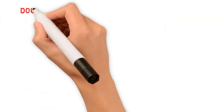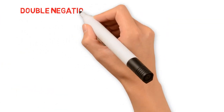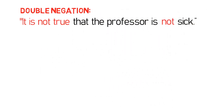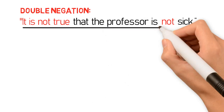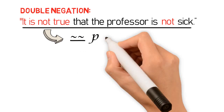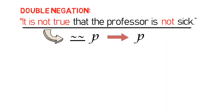Now, sometimes a statement can be double or even triple negated — in other words, the statement contains two or more negation signs. If this happens, then the statement has to be symbolized accordingly. Consider this example: 'It is not true that the professor is NOT SICK.' If we let P stand for the entire statement, then it is symbolized as: NOT NOT P. However, since a double negation implies affirmation, the statement can also be symbolized simply as: P.